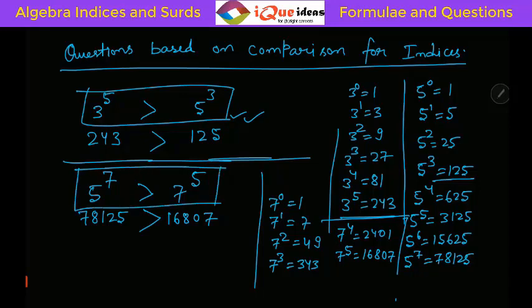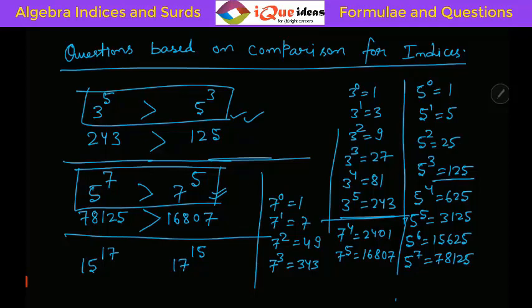What we are doing here is using direct values, but 3, 5, and 7 are smaller numbers where you can check powers easily. If the values are larger, for example which one is greater out of 15 raised to 17 and 17 raised to 15, it will be really difficult to calculate the values in a short duration.